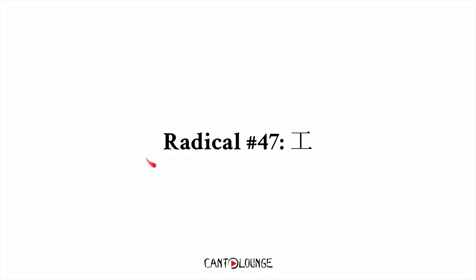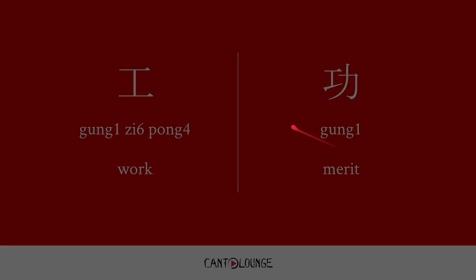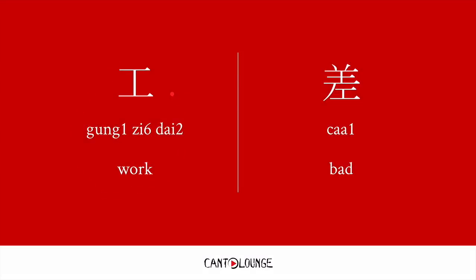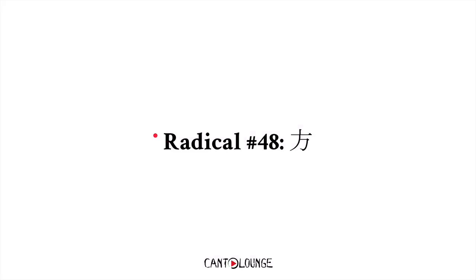Radical number 47: 工, meaning work. 工字旁 — for example, 功, meaning merit. And 工字底 — for example, 差, meaning bad.